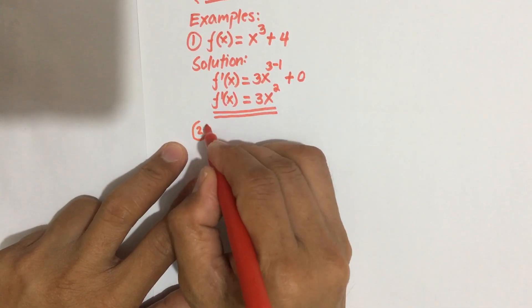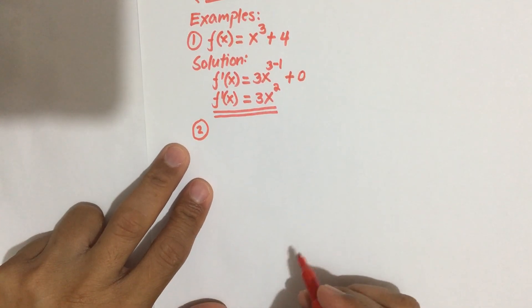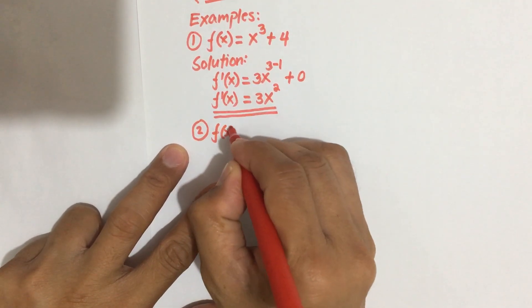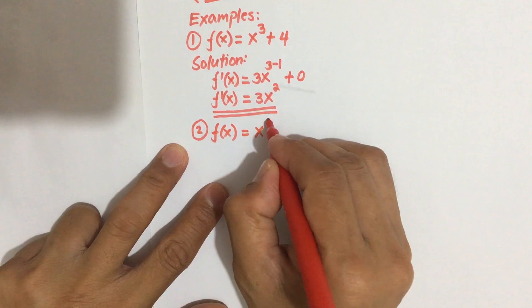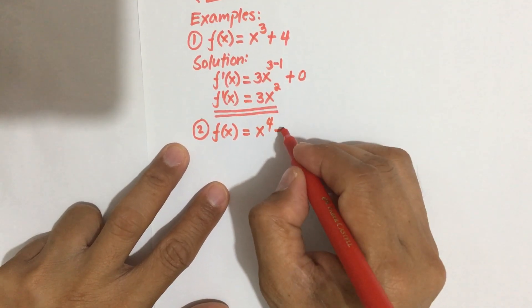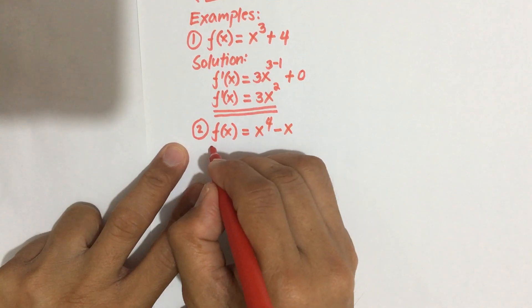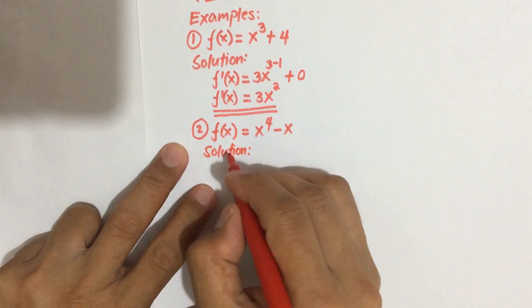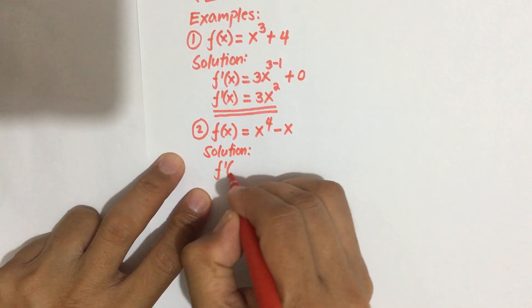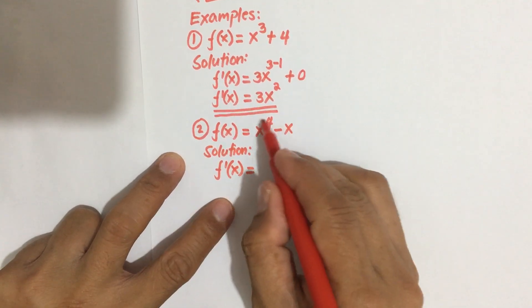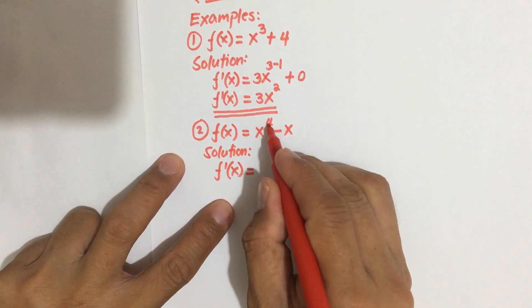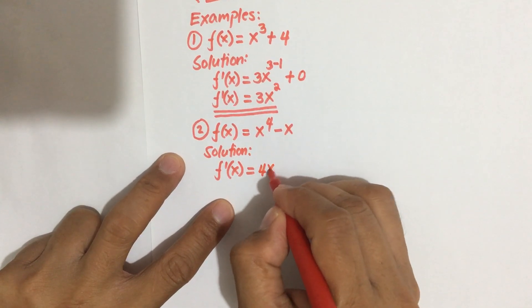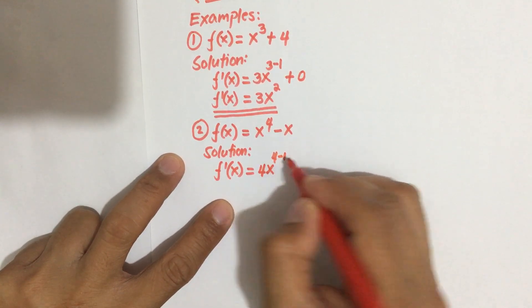Example number 2: if you are given f(x) equal to x to the power 4 minus x, then to find the derivative, f'(x) is equal to — again using the power formula, bring down the exponent which is 4, multiply it by the base x, then subtract the power by 1.